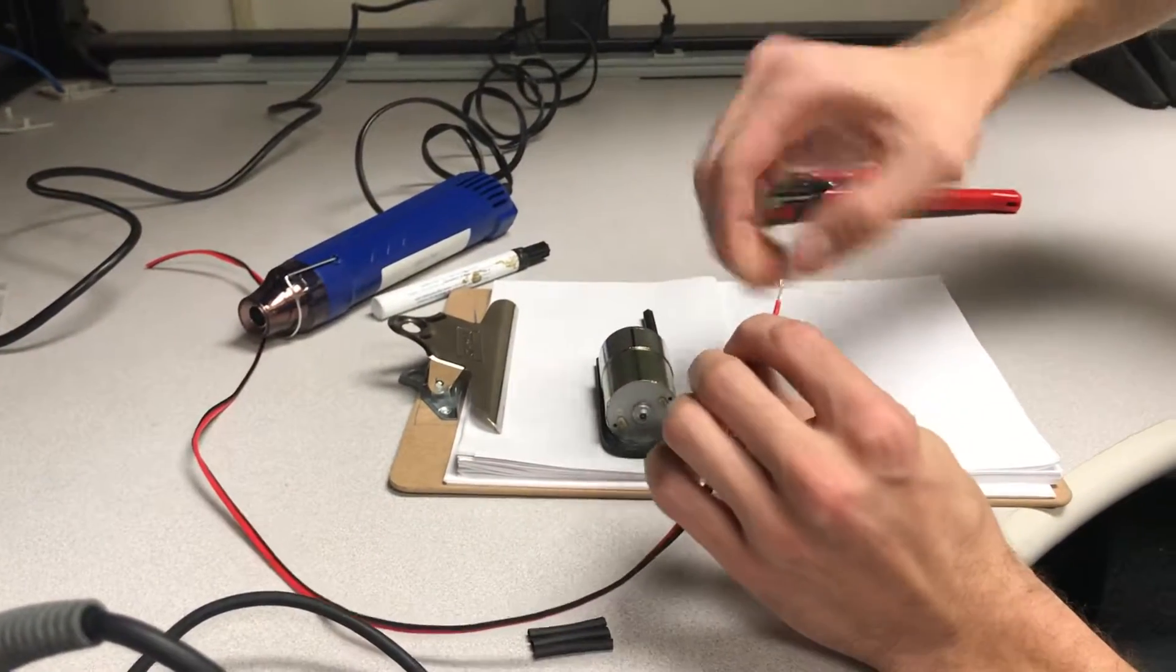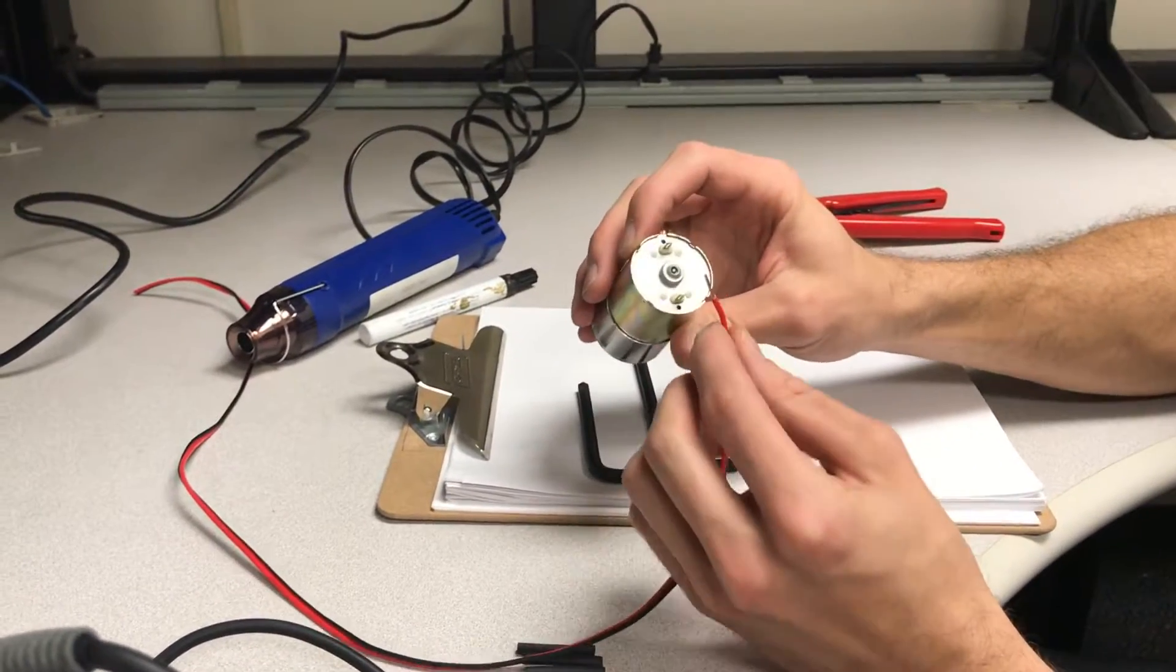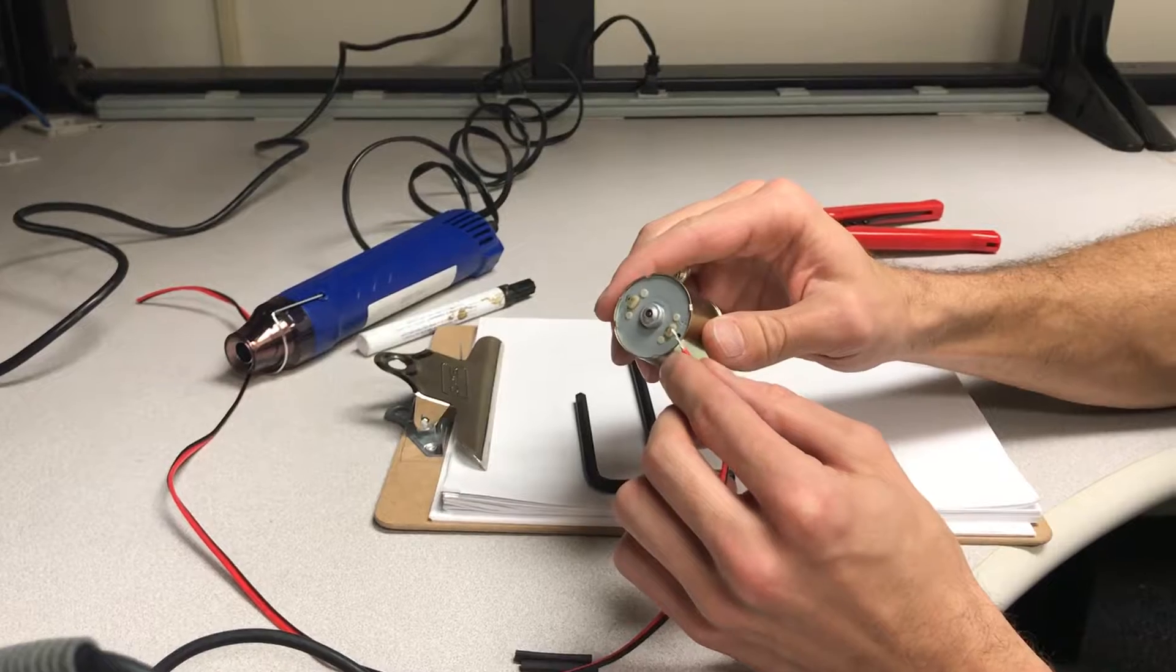Then gently twist the first lead, and you want to make sure that red wire goes to the positive terminal on your motor.